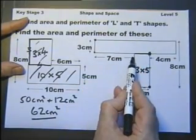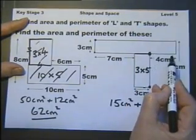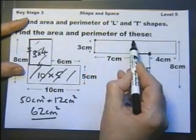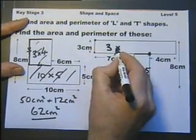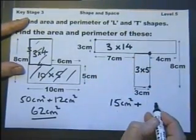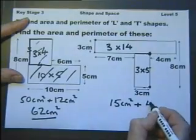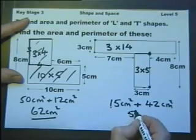The area of this is 3 times whatever that is. Well that bit is 7, that bit is 3, that bit is 4. So this must be 7 plus 3 plus 4, which is 14. So 3 times 14, 42, 57.